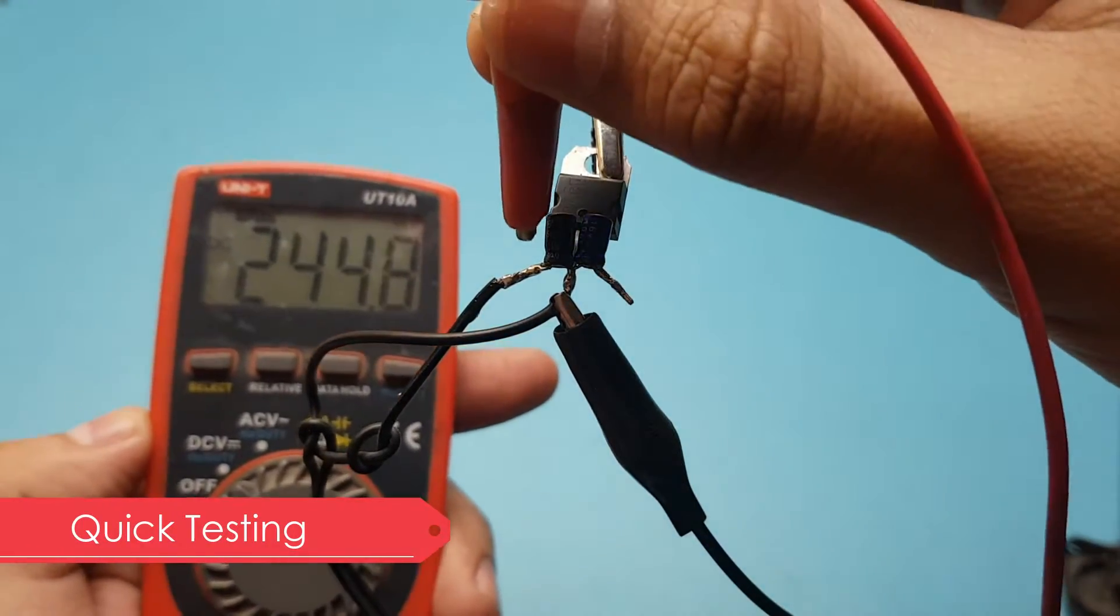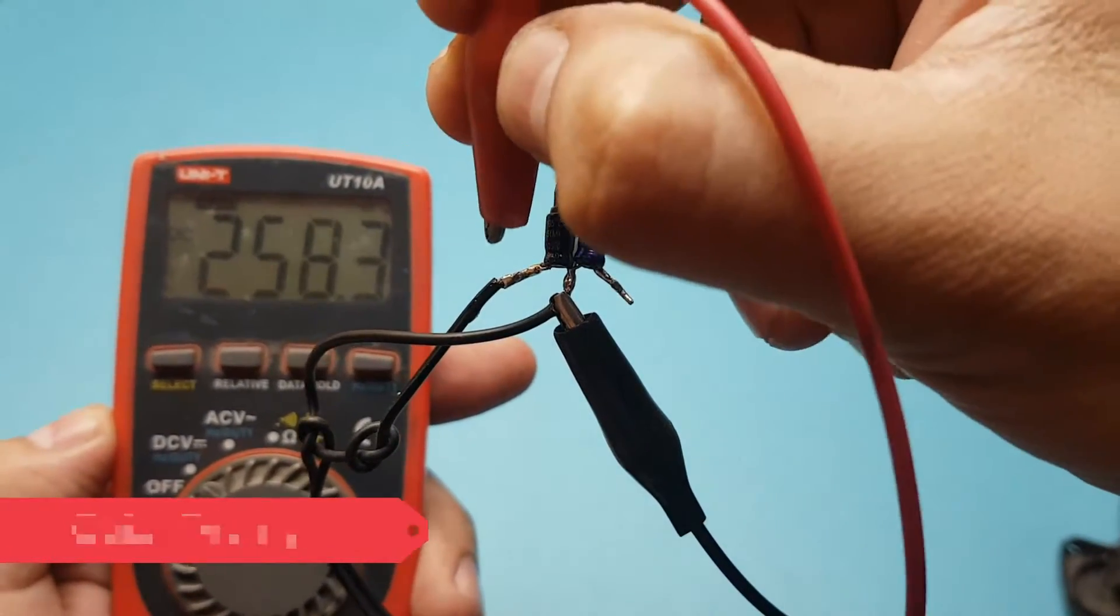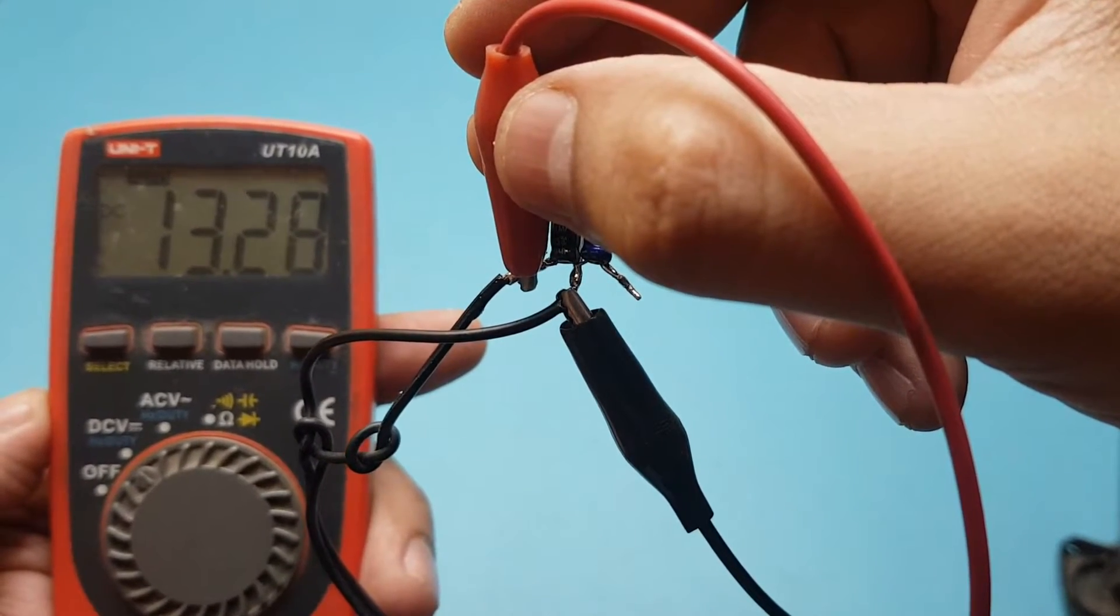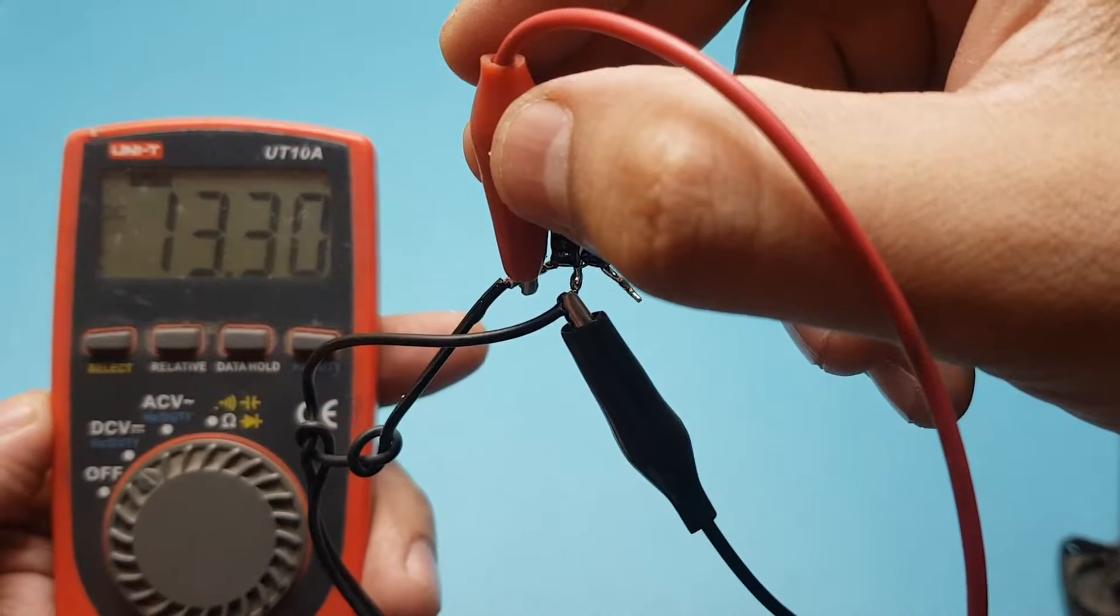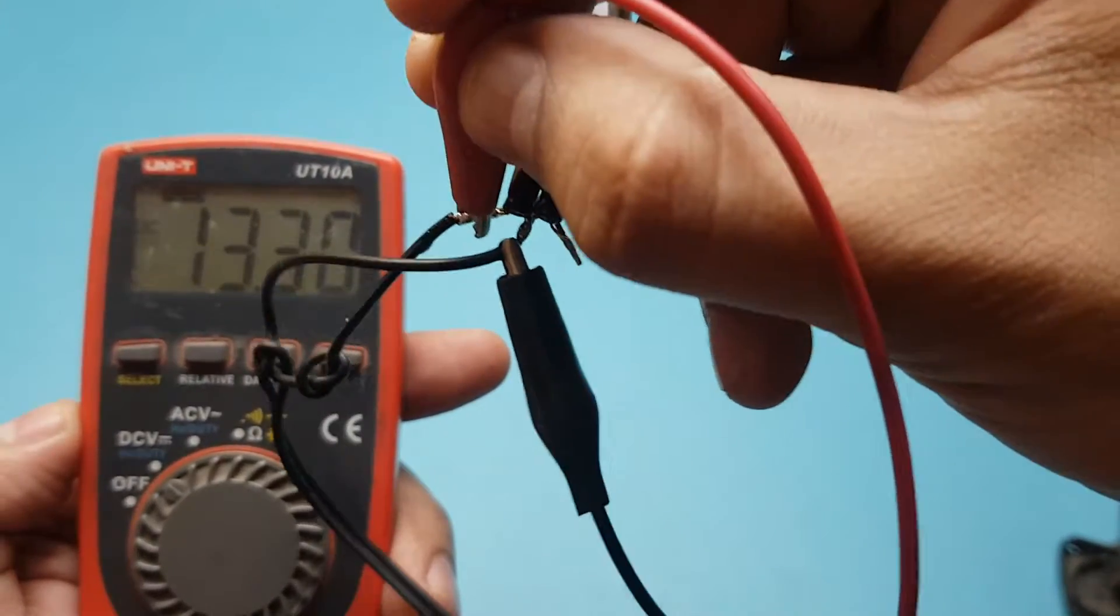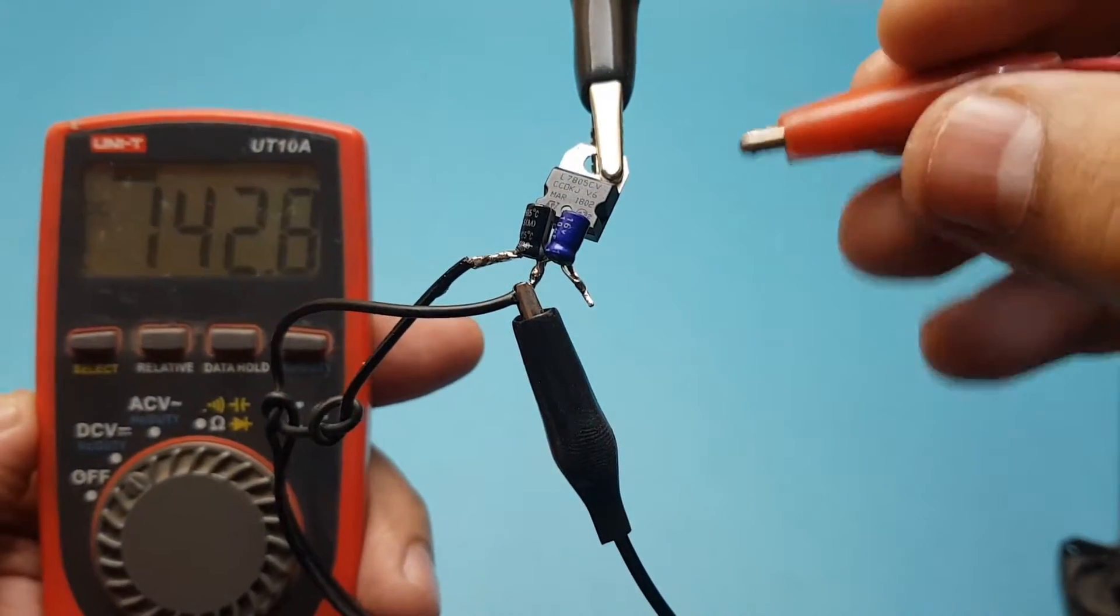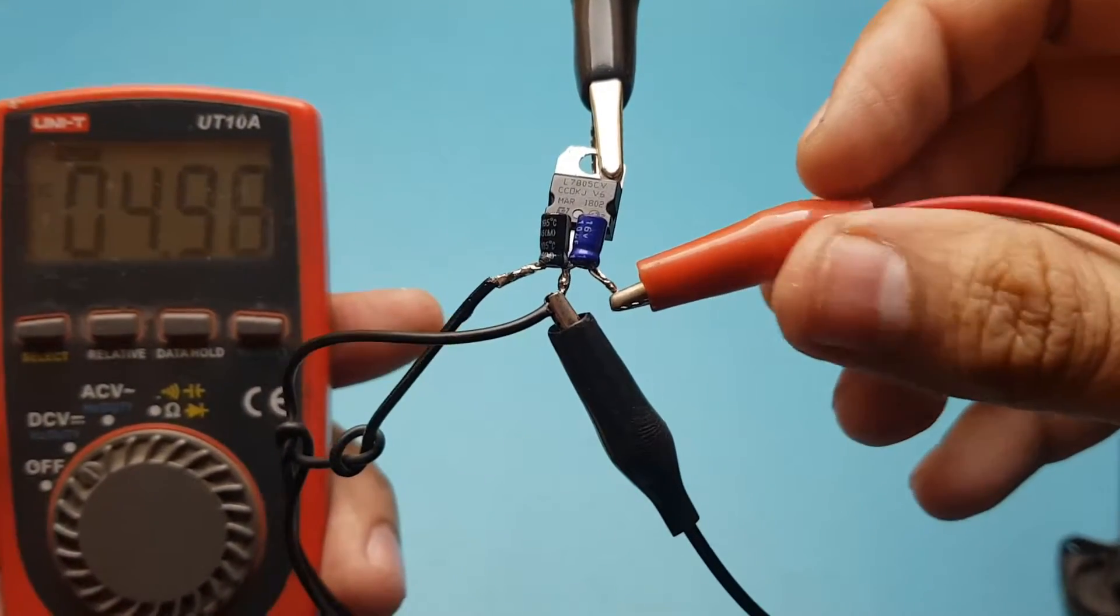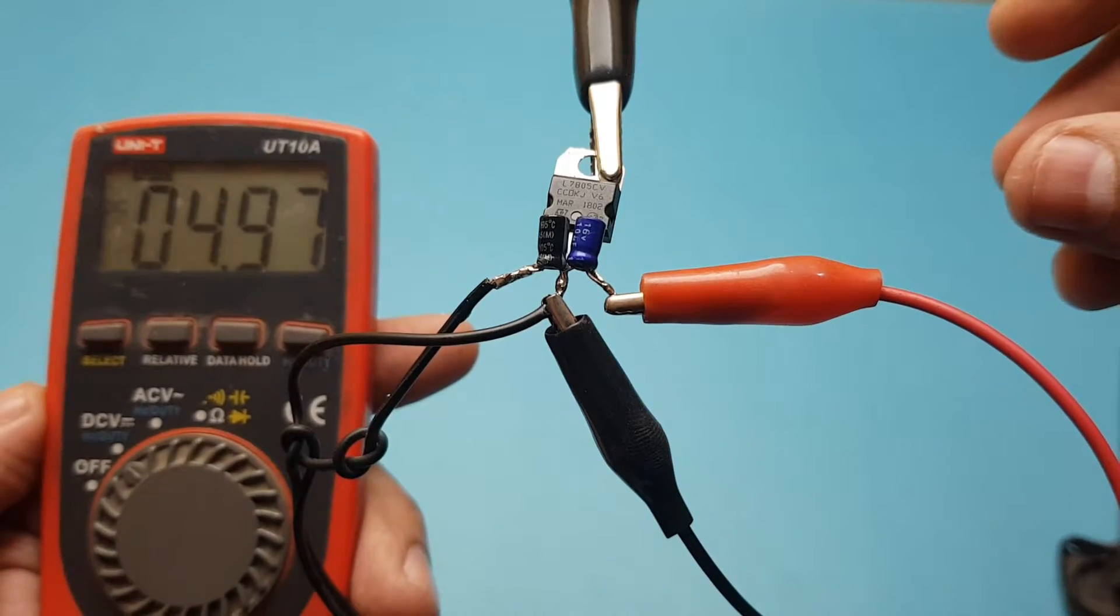Let's do some quick testing and see if everything is working properly, then we will proceed with the voltage drop test and the short circuit test. As you can see, the input side is showing 13.3 volts and the output side is showing approximately 5 volts.